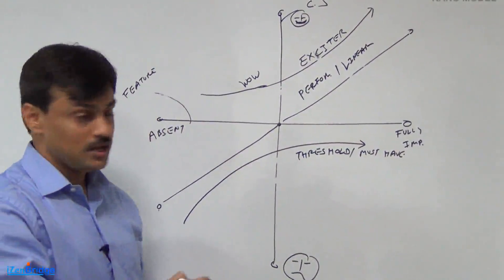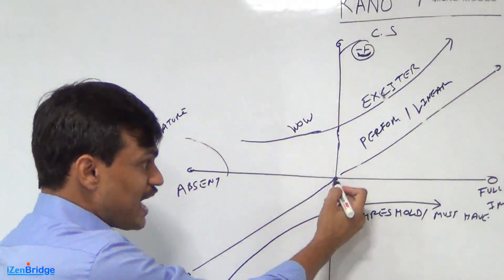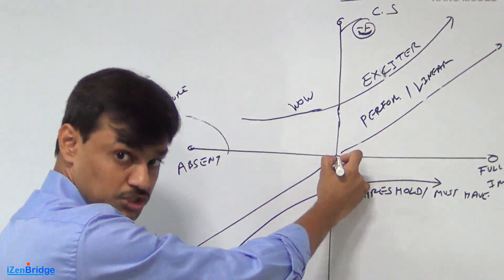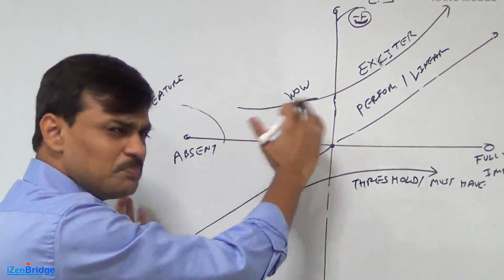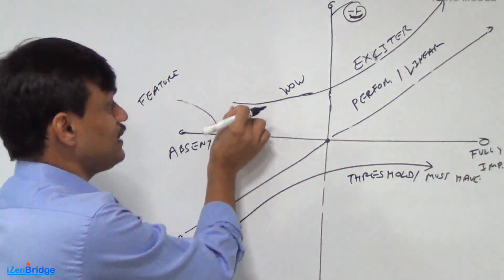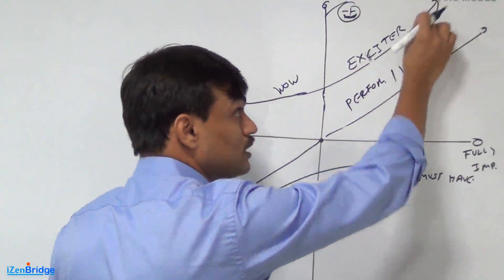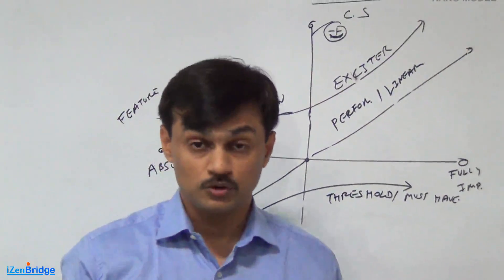Customer is not expecting them. So if they are present, customer is not feeling bad. This point represents customer is neutral about them. So if it is not implemented, customer is okay. If even part of it is implemented, customer will start feel good. If you implement some more, customer will be excited about them.